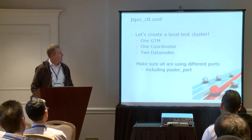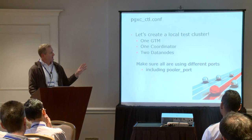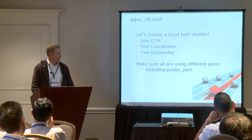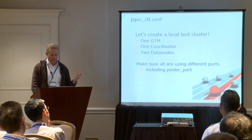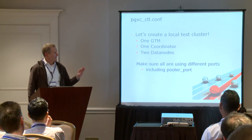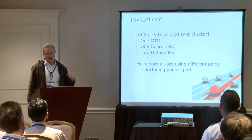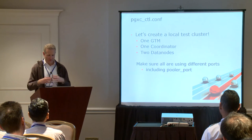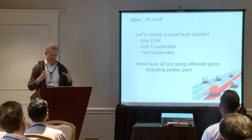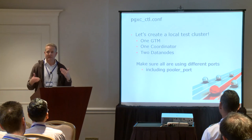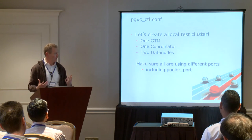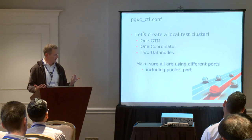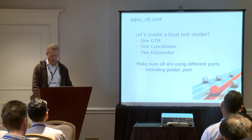Let's look at how to configure a fairly basic cluster of one GTM, one coordinator, and two data nodes. The main thing that trips people up is port conflicts — basically, data node or pooler ports are conflicting. The utility goes through and tries to look for conflicts and warn you — it won't try to initialize a new cluster if it detects a port conflict.